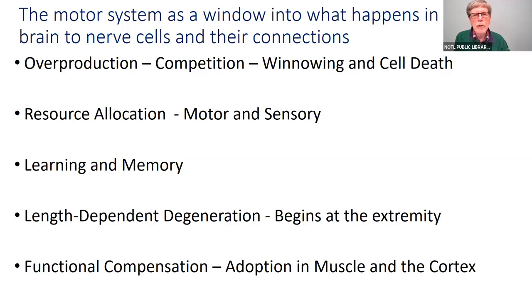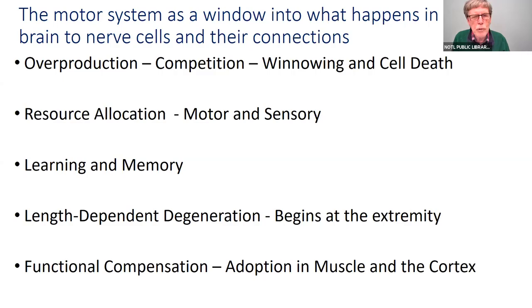One theme is that during development, the brain makes at least twice as many neurons as it will ever need. A certain competition goes on for connection, then a winnowing process takes place. Those that have made successful connections are retained, and the other neurons disappear without a trace — so-called apoptosis. This also works in the peripheral nervous system, where motor neurons all scramble to innervate the same muscle fibers. In infancy, muscle fibers may be innervated by two or more motor neurons, but in adults, only one.